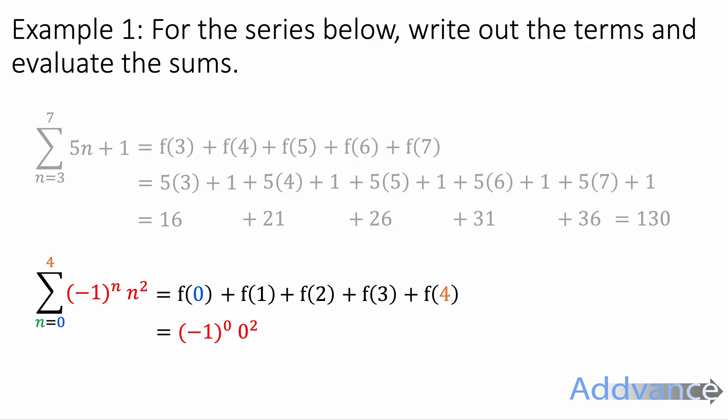And we're going to replace the n's in the expression with those integers. So minus 1 to the power 0 times 0 squared. Minus 1 to the power 1 times 1 squared. And we continue substituting these in like this.